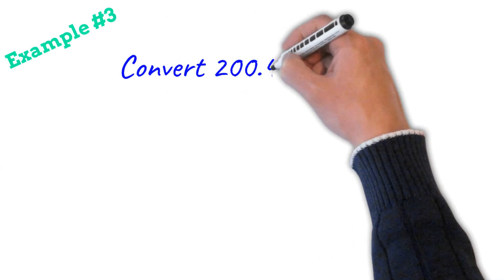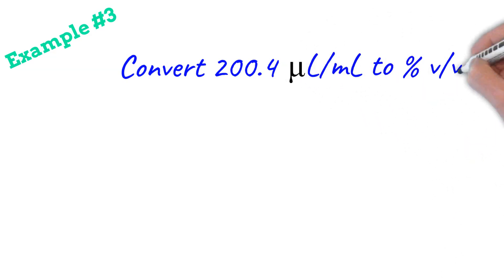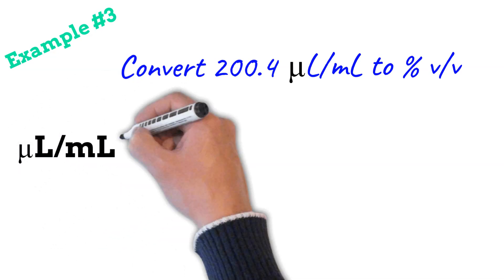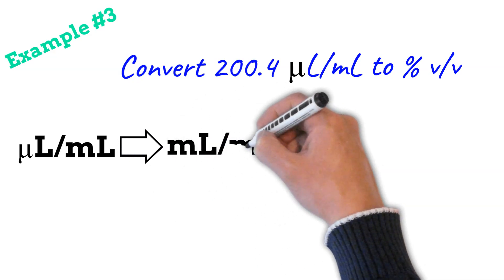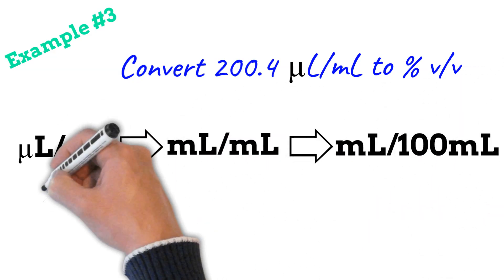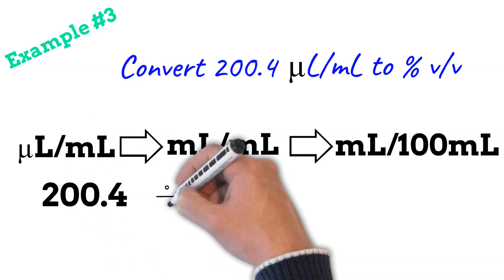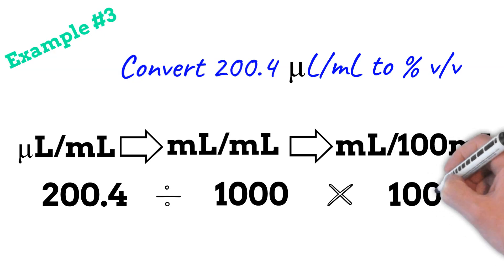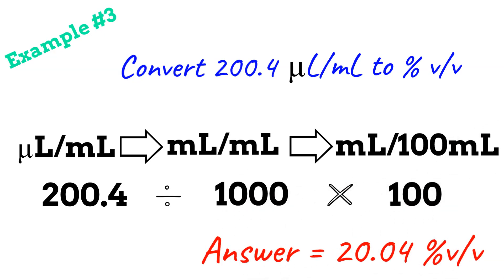Let's do another example: convert 200.4 microliters per milliliter to percentage volume per volume. Start with your microliters per milliliter, convert that into milliliters per milliliter, and then convert to milliliters per 100 mL, which is your percentage v/v. Take your value, divide it by a thousand, then times it by a hundred, and you get 20.04% v/v.